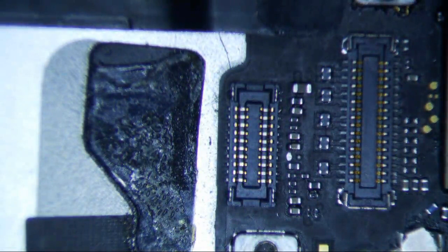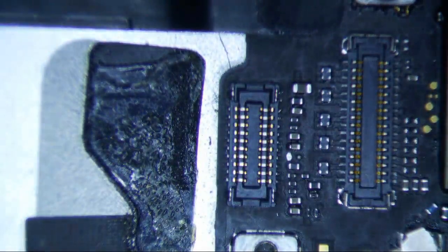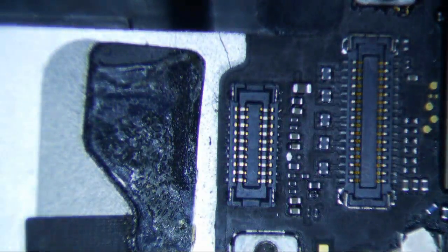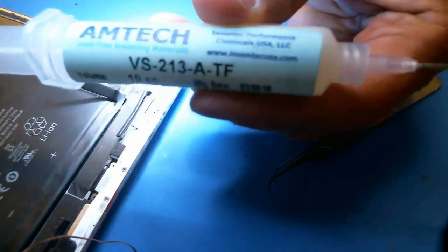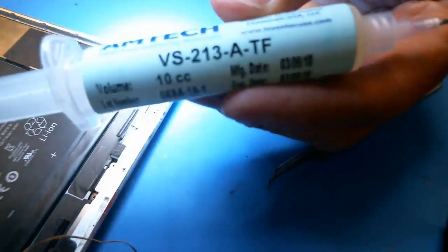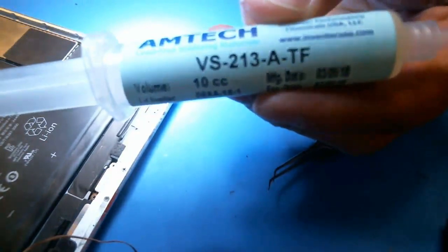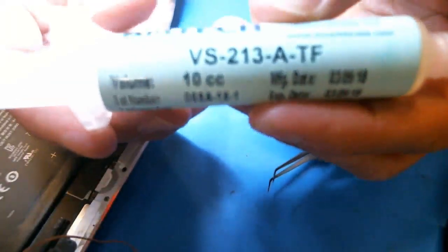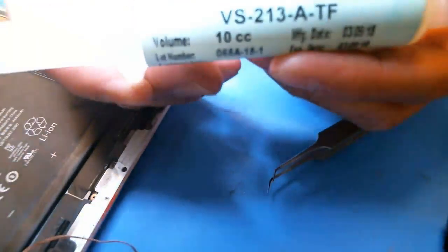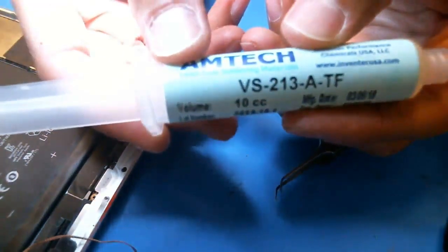If you don't own some of this new Amtec stuff, I would definitely consider buying some. You can go to our store, just go to microsoldering.com, click on store, and then you can buy the new flux. And again, it is VS213A Tacky Flux. And this is the new stuff that you should be using. It's going to make your life a lot easier. Thanks for watching.